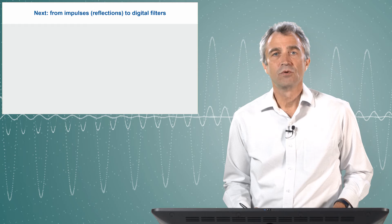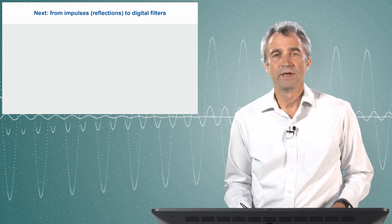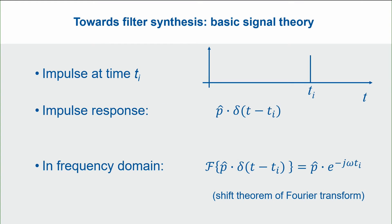This is the right time to think about creating filters on the basis of impulse responses. We need to remember basic signal processing facts. If we have an impulse arriving at a certain time Ti, as illustrated in this plot, it can be represented by a Dirac delta function with a time shift of Ti. If this corresponds to a reflection of sound, it has a certain pressure amplitude. In the frequency domain, the Fourier transform of the Dirac pulse is an exponential function with a phase shift according to the frequency and the time, with the same pressure amplitude factor.